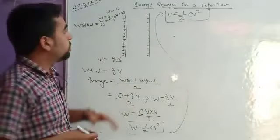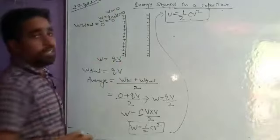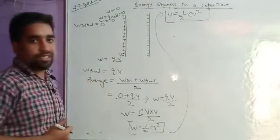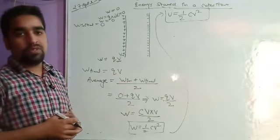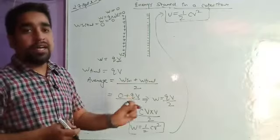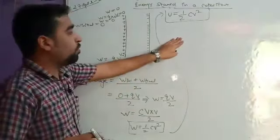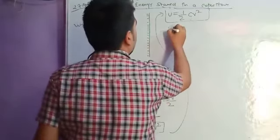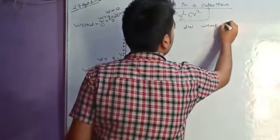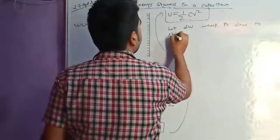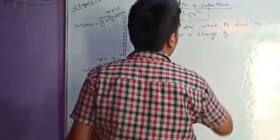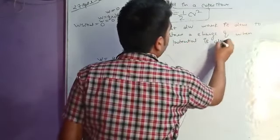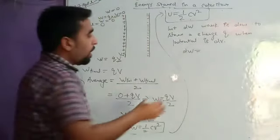By the method of integration: we have seen that the potential initially was zero and finally it is V, so the potential is changing as we bring all the charges. We cannot calculate the total work done all at once, so we calculate it for a very small potential dV. The corresponding small work done will be dW. Let dW be the work done to store a small charge q when potential changes by dV.